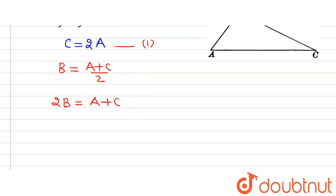Now, solving it further, we can write C is equal to 2A. So 2B will be equal to A plus C, which is 2A. From equation 1 we know that C equals 2A, so we will have 2B is equal to 3A. Let's name this as equation 2.